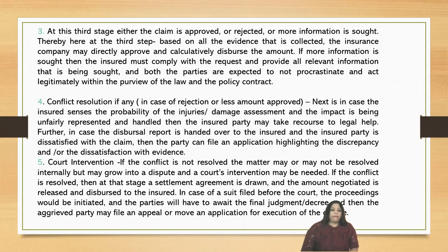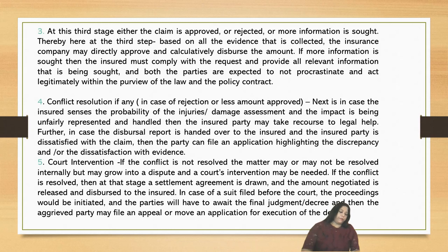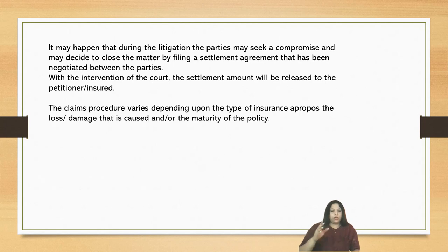In case of a suit filed before the court, proceedings will be initiated and the parties will have to await the final judgment or decree. The aggrieved party may file an appeal or move an application for execution of the decree. If any of the parties against whom the judgment has gone wants to appeal, the party may take it further for an appeal within a particular period. In case the appeal period lapses, the other party can file an application for execution, obtain the execution order, submit it to the insurance company, and then the insurance company would disburse the claim.